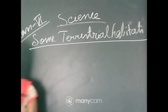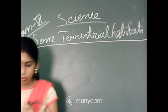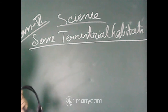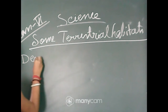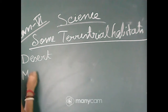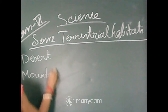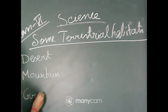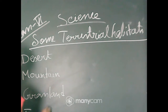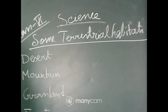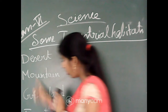Under the terrestrial habitat, we will find different types. What are they? Desert, mountain, grassland, forest, etc. So under the terrestrial habitat, some examples or types are desert, mountain, grassland, forest, and so on. Today I will start with the desert.